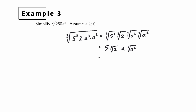Rearranging the factors, we write 5a, then use the multiplication property to put the remaining factors back under one cube root sign, giving the cube root of 2a squared. We have simplified this radical expression — there are no perfect cubes under the radical, and we're done.